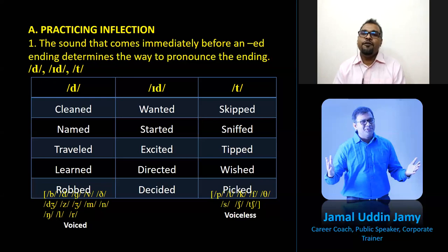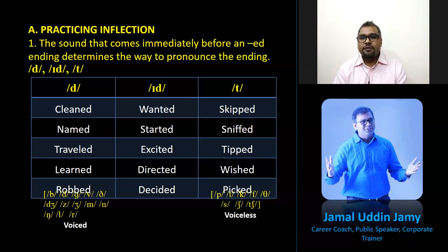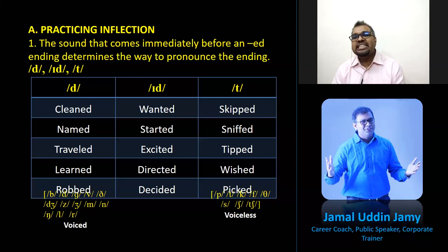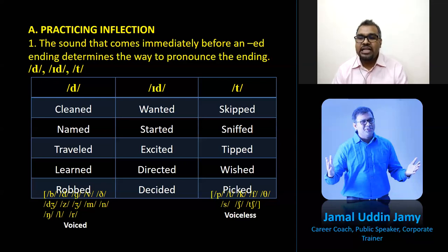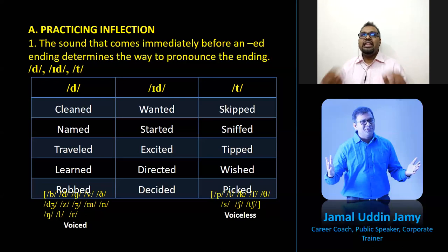In the subcontinent — India, Bangladesh, Sri Lanka — people say 'wanted' with an 'ed' sound instead of 'id.' For example: 'I wanted to go but I couldn't.' The correct pronunciation is 'wanted' — with the 'id' sound. With 'want' plus -ed, it becomes 'wanted.' Similarly: 'started,' 'excited,' 'directed,' 'decided' — all use the 'id' sound.